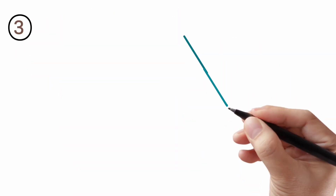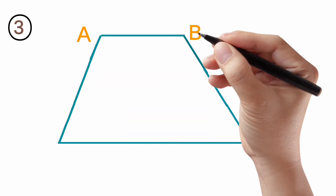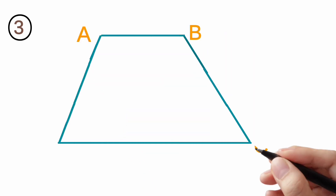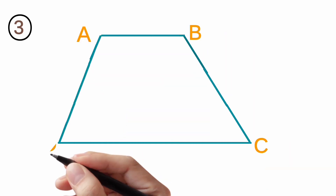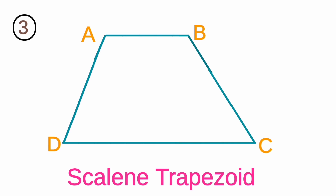This is Type 3, the last trapezoid. It is labeled A, B, C, and D. AB is not equal to BC, BC is different from DC, and AD is also different. All the sides are different. So it is a scalene trapezoid.